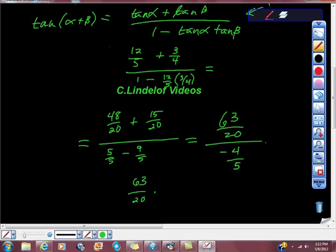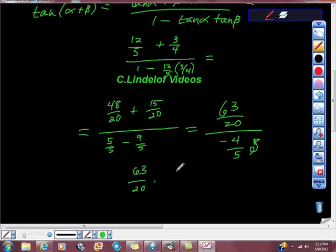63/20 times the reciprocal, which is -5/4, gives us -63/16. Does this reduce further? No, so our final answer is -63/16.